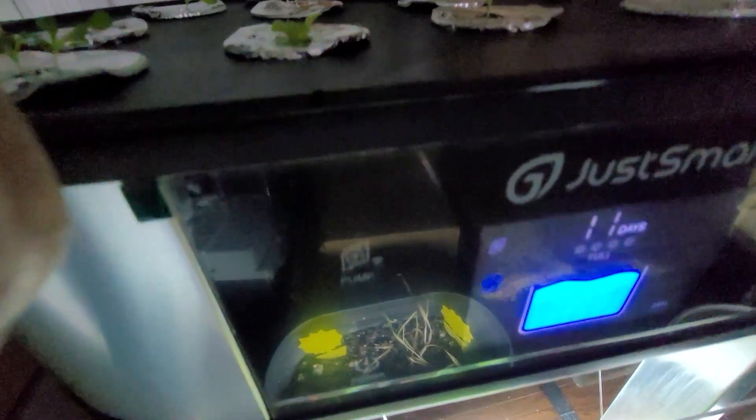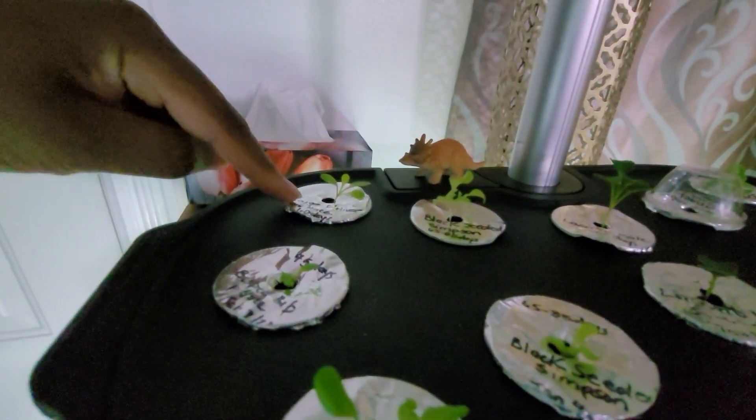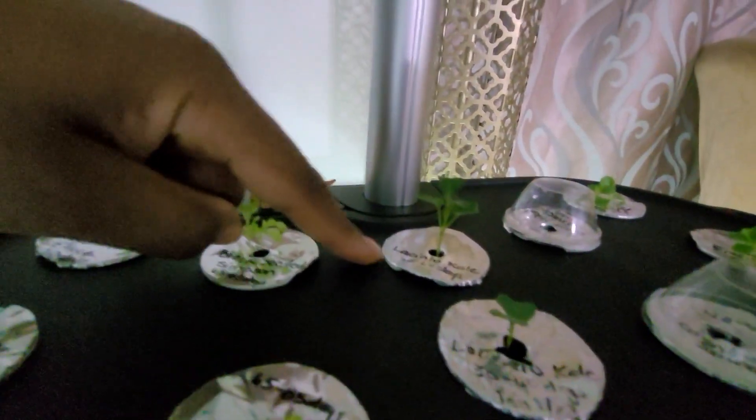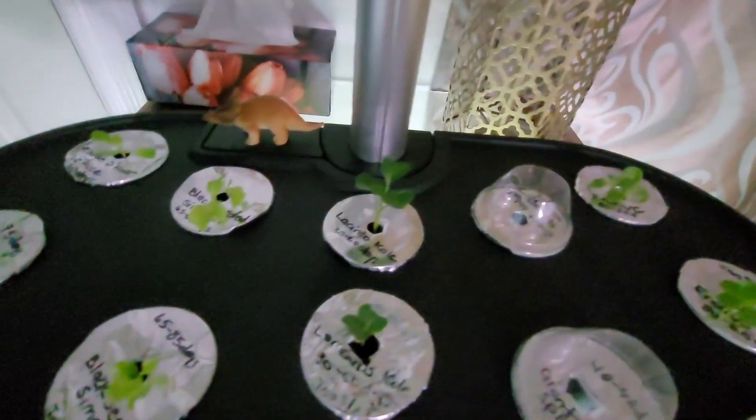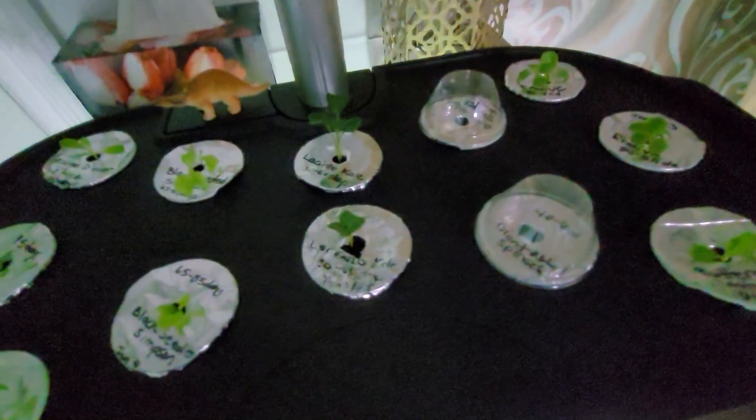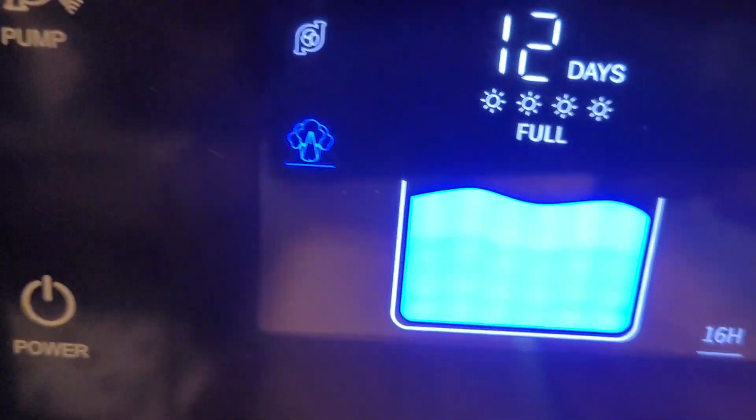Update for day 11. Burpee Bib, black seeded Simpson, black Rouge Diver, Burpee Bib, black seeded Simpson, Rouge Diver, Burpee Bib. Black seeded kales are doing well. I'm going to try to separate them. That's the update for day 11.